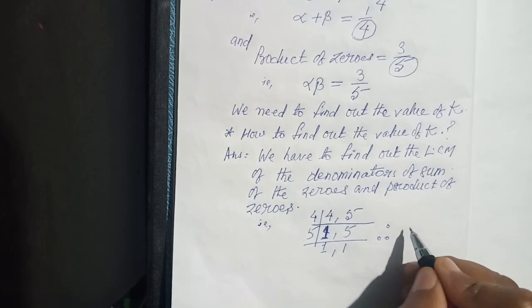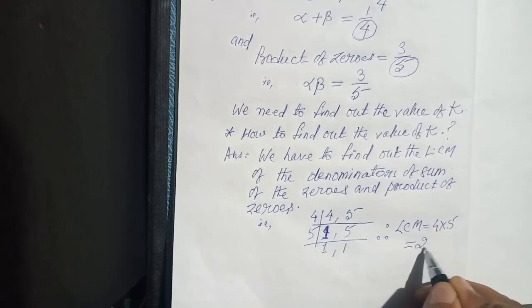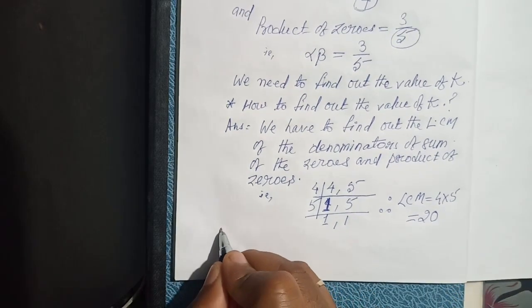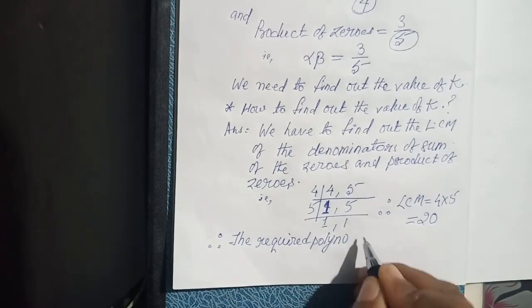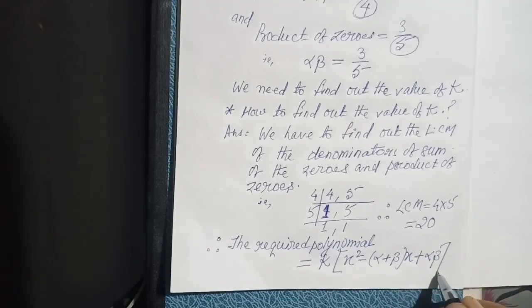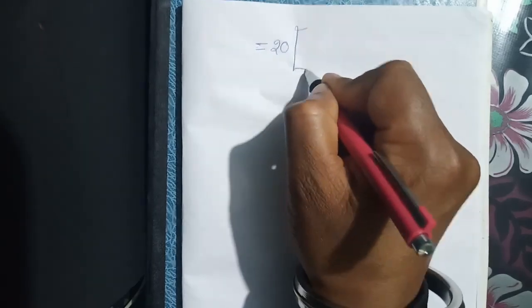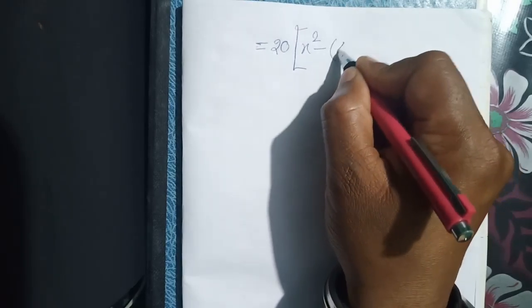Therefore, LCM equals to 4 into 5. Therefore K is 20. The formula is: K x square minus alpha plus beta x plus alpha beta.